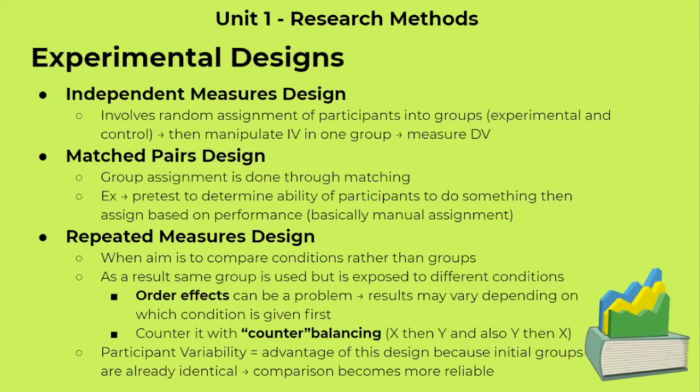The last design is repeated measures design. In this case, we're not going to be using different groups. We're going to use the same group, but vary the conditions that the group undergoes. There is a problem here: order effects. Depending on the order of conditions that the same group experiences, we could have biases. If we do condition x before y, x may have an effect on y, and if we do y before x, y may have an effect on x, skewing our results. The way to resolve this is counterbalancing — taking the same group but using both orders of conditions, testing x then y and then y then x, to cancel out the effect.